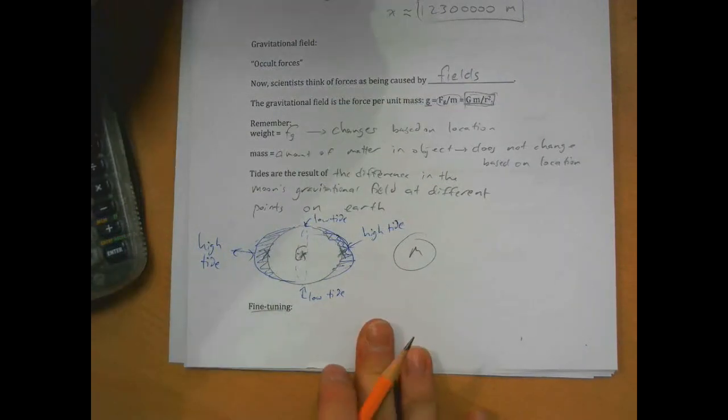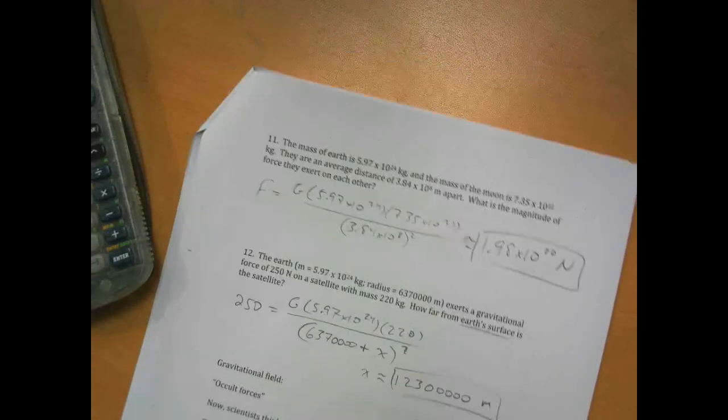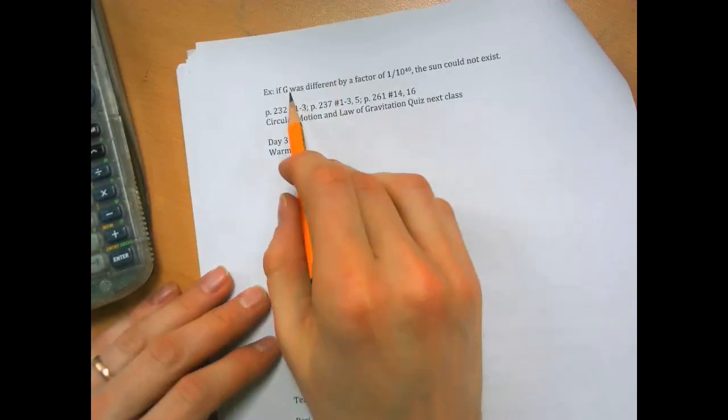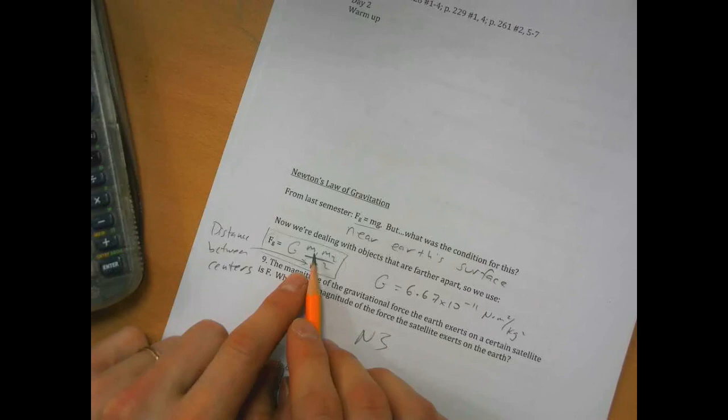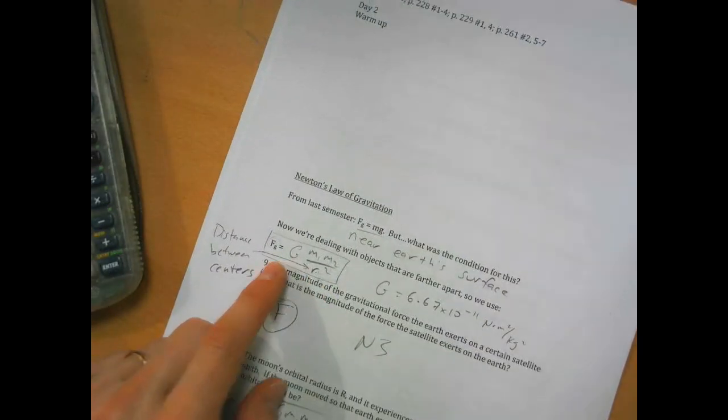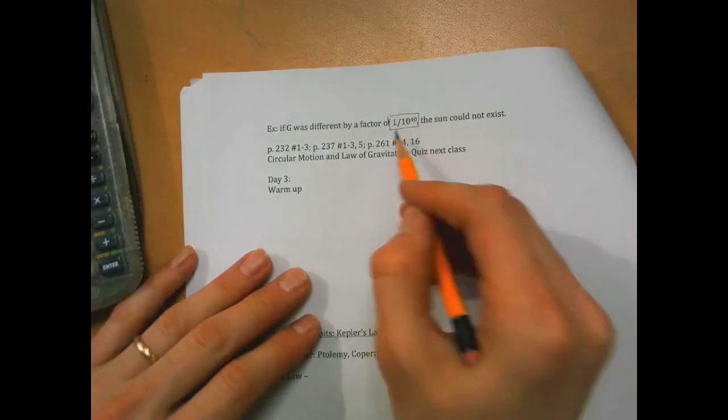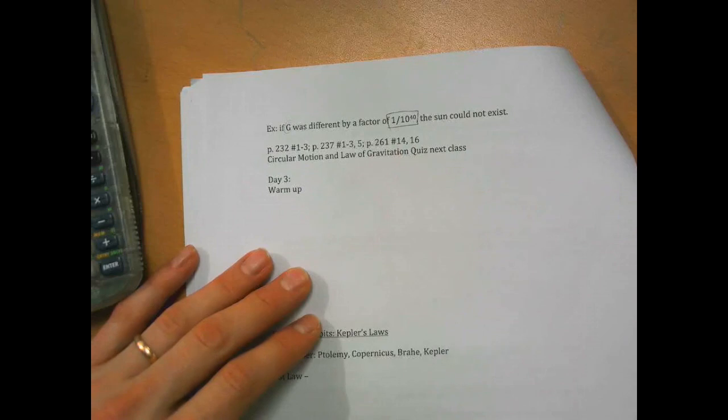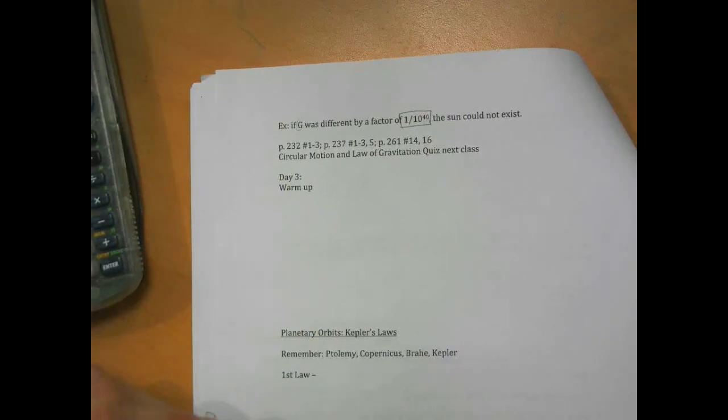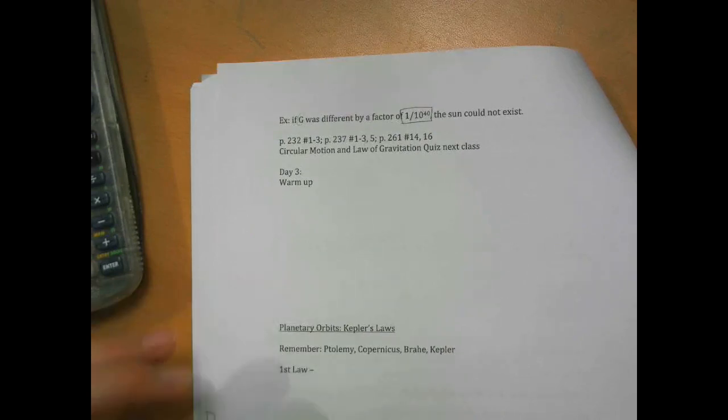And also earth wouldn't be precisely where it is related to the sun. I read one thing, but I read from one source that said that if the value of g, even if the force worked the same way where it was masses times each other with the denominator of r squared, if g was different by a factor of one over ten to the fortieth, then the sun wouldn't be able to exist, because it wouldn't have formed the way it stayed together the way it did. I think the fine tuning of the universe is a good argument for the existence of a creator.